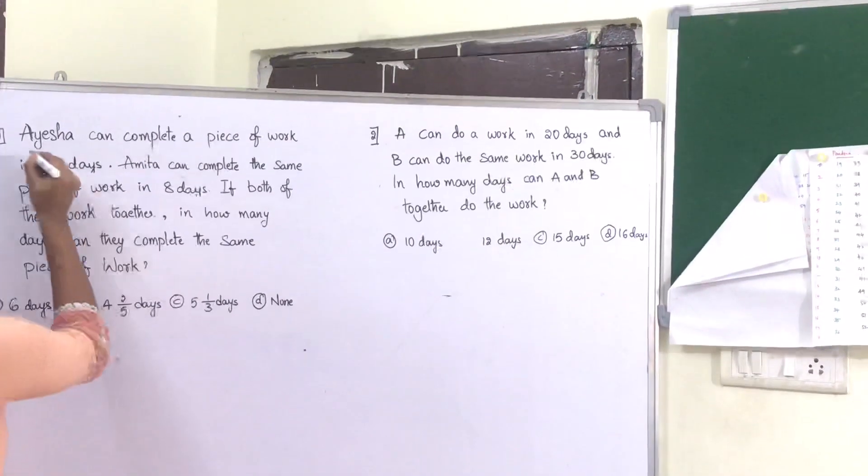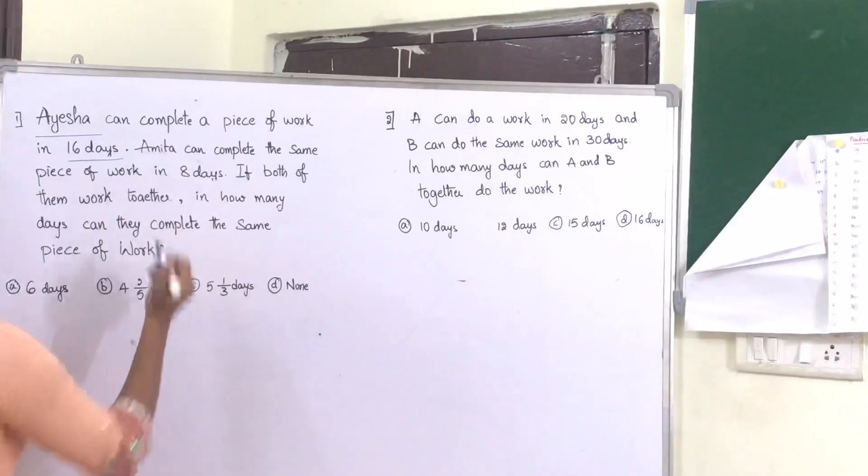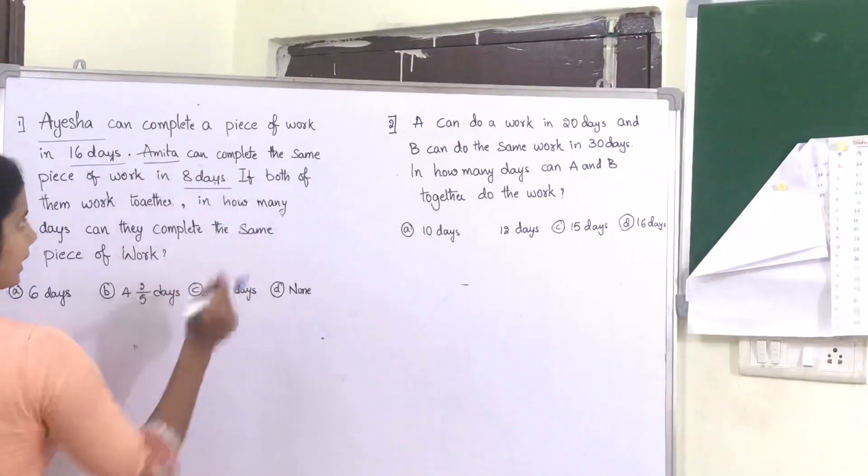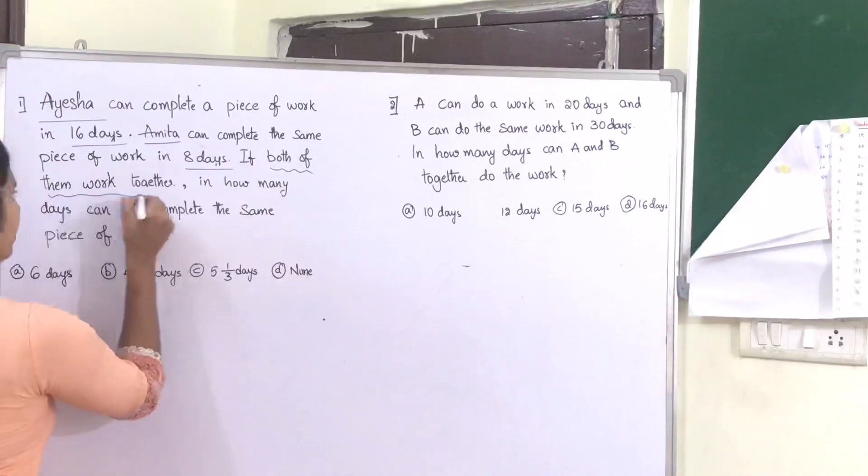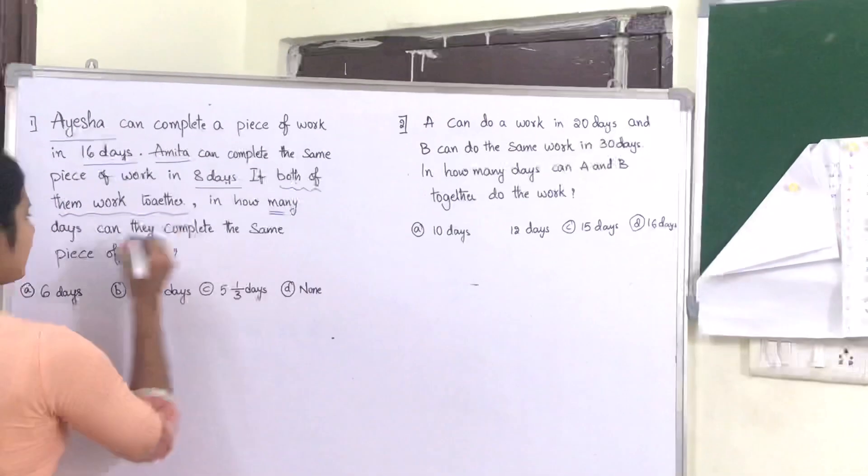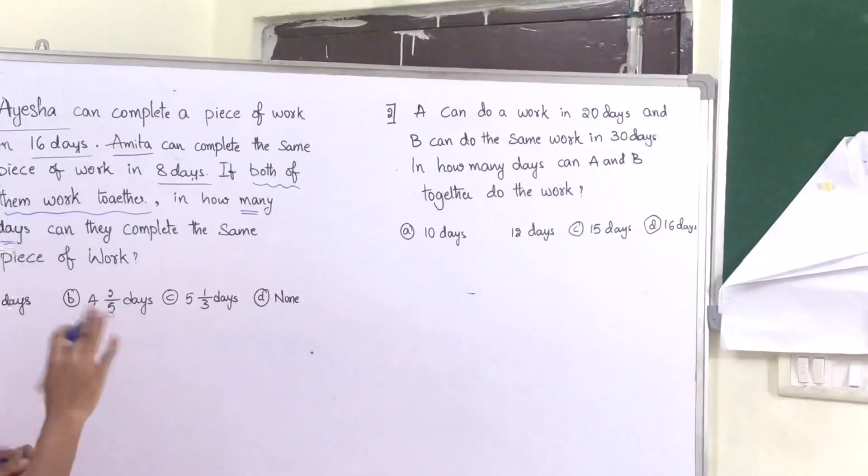The given data: Aisha can complete the work in 16 days, Amita can complete in 8 days. They are asking if both of them work together, how many days will it take?